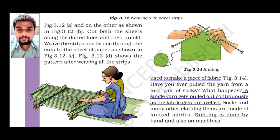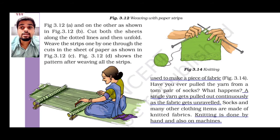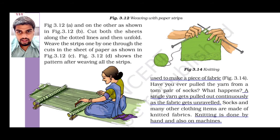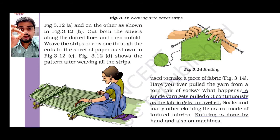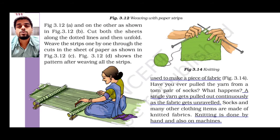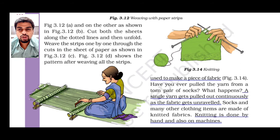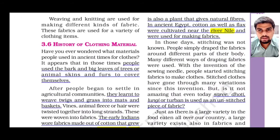As shown in figure 3.14, an example of knitting a sweater or shawl is given. As stated in your textbook, a single yarn gets pulled out continuously as the fabric gets unraveled in knitting — if we pull out a single thread it gets continuously pulled out and the entire fabric becomes open (unraveled means 'khuljana'). Knitting is either done by hands or using machines; in earlier times hands were mostly used, but nowadays machines are used.